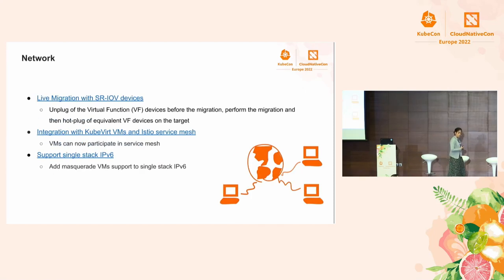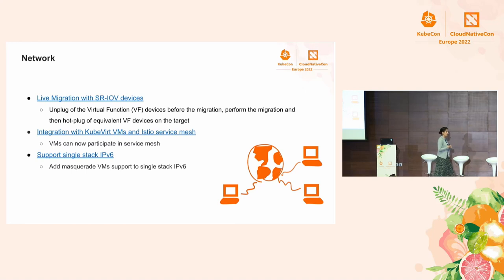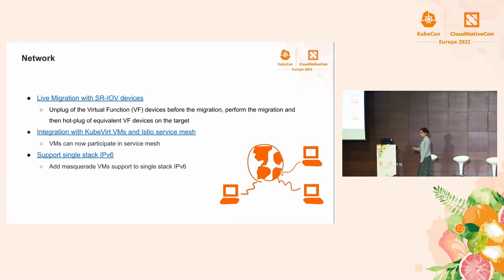Another area is of course network. Live migration is one of the top features implemented by KubeVirt, as Kubernetes doesn't foresee pod live migration yet. Unfortunately not all virtual machines are migratable — one cause is that certain devices cannot be automatically detached and re-attached during migration. That was the case for SR-IOV devices. Recently we overcame this limitation by unplugging the virtual function device, performing the migration, and then creating an equivalent virtual function device on the target node.